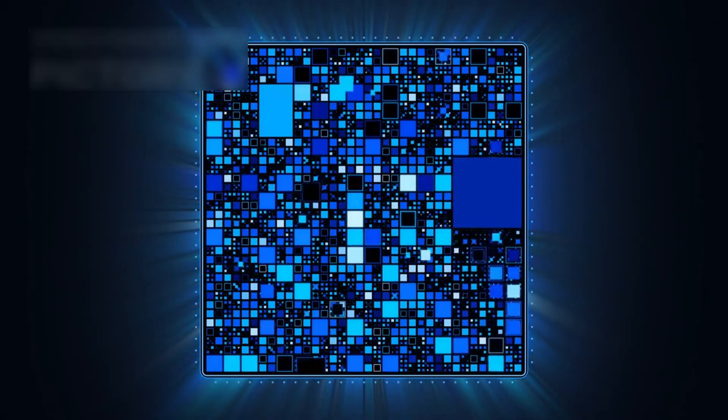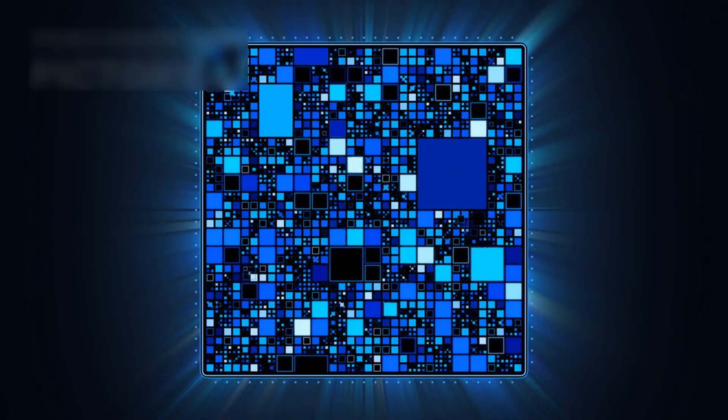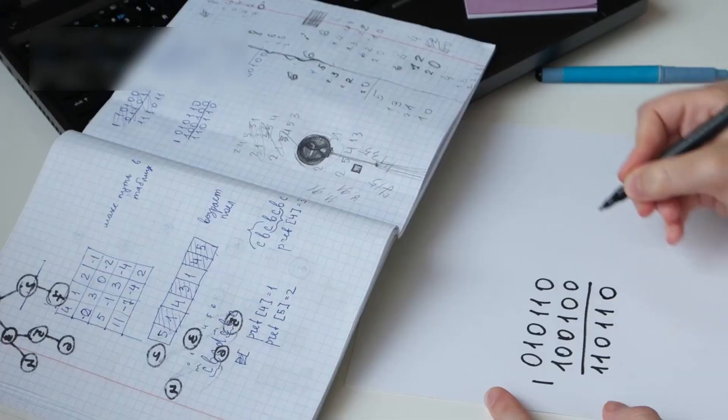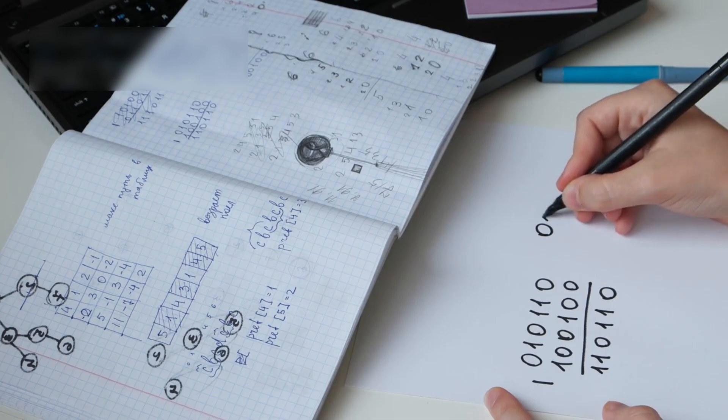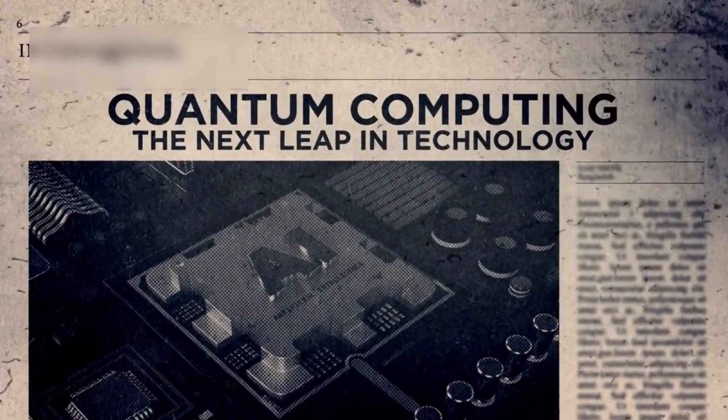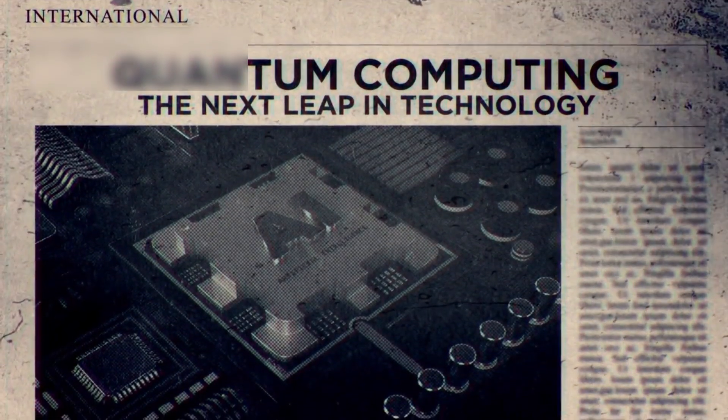In traditional computing, information is processed using bits, which can be either zero or one. These bits are manipulated in a sequential manner, limiting the speed and complexity of computations. Every calculation is confined to this single, well-defined state of our universe.